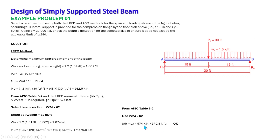Using W24×62 from the AISC manual is acceptable because its capacity of 574 kip-feet is greater than the design moment of 570.8 kip-feet. So that section is okay.